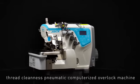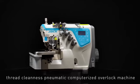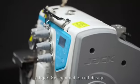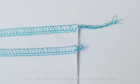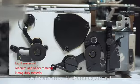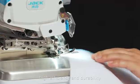Jack C5S Thread Cleanness Pneumatic Computerized Overlock Machine adopts German industrial design with the characteristics of thread cleanness, dust cleanness, thickness adjustment, high efficiency, and durability.